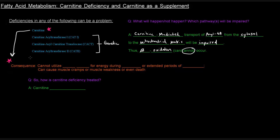If someone doesn't have carnitine, then you can't form acyl-carnitines. And if you can't form acyl-carnitines, then you can't get acyl-CoA's to the mitochondrial matrix where beta-oxidation can happen. So the consequence of that carnitine deficiency is that you can't utilize fatty acids for energy. Fatty acids are a long-term energy source, whereas free glucose in our cells can be used immediately, and glycogen is a short-term energy source as well.